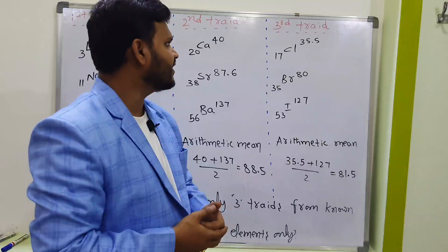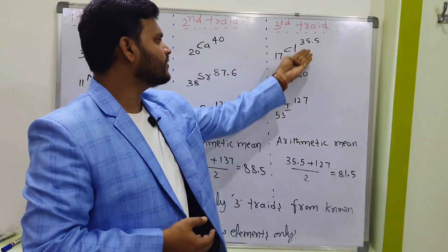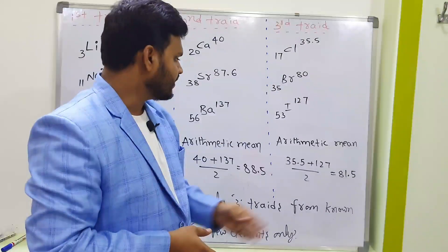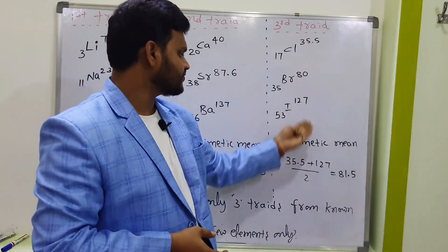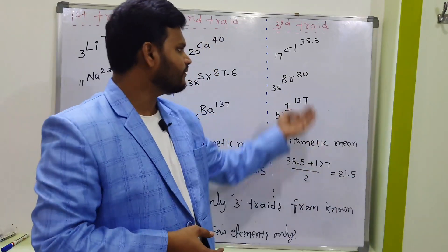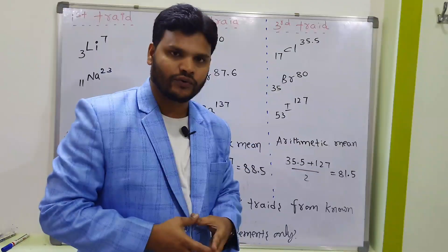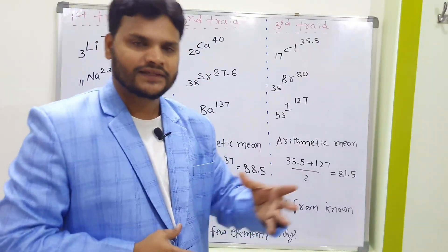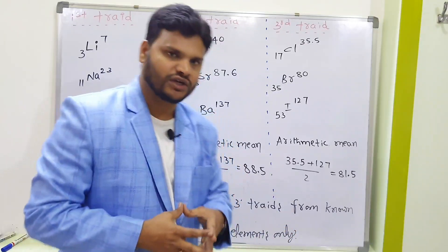For the third triad — chlorine, bromine, iodine — the arithmetic mean of chlorine and iodine gives approximately 81.5. Bromine's atomic weight is 80. The difference is just 1.5, which is a negligible atomic mass difference.